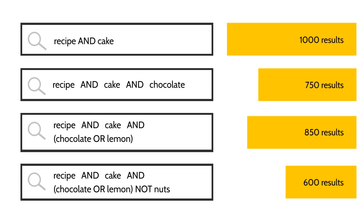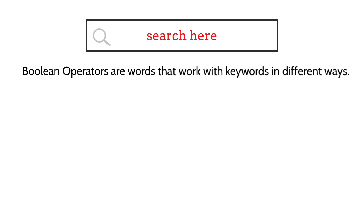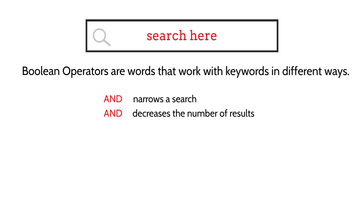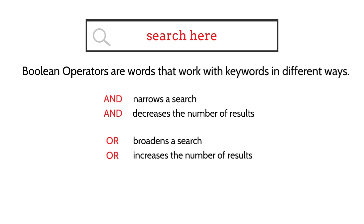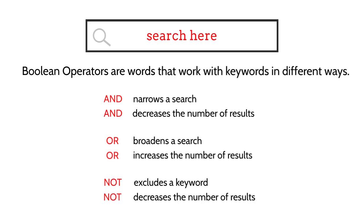Let's summarize. Boolean operators are words that work with keywords in different ways. AND narrows a search and decreases the number of results. OR broadens a search and increases the number of results. NOT excludes a keyword and decreases the number of results.